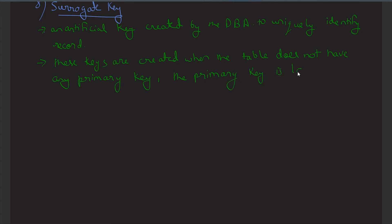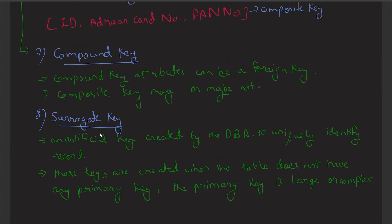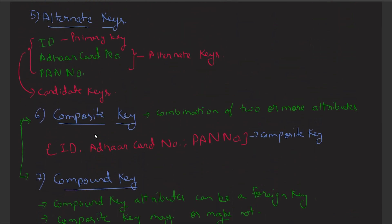In these cases, we create a new attribute called a surrogate key or artificial key that will identify each record uniquely. It can be any integer or any number that is useful to identify records easily. So these are the eight keys discussed in this module. From the next video we will start the third module. Thank you.